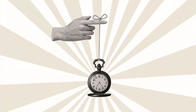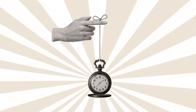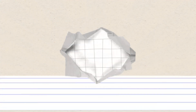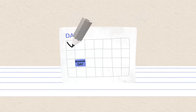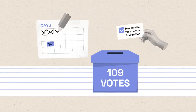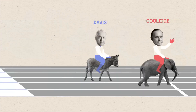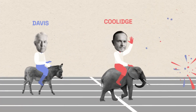There were occasional surprises over the selections. Some conventions took a long time to name a nominee. In 1924, the Democrats spent 16 days and took 109 votes to nominate John Davis, who lost the election to Republican Calvin Coolidge.